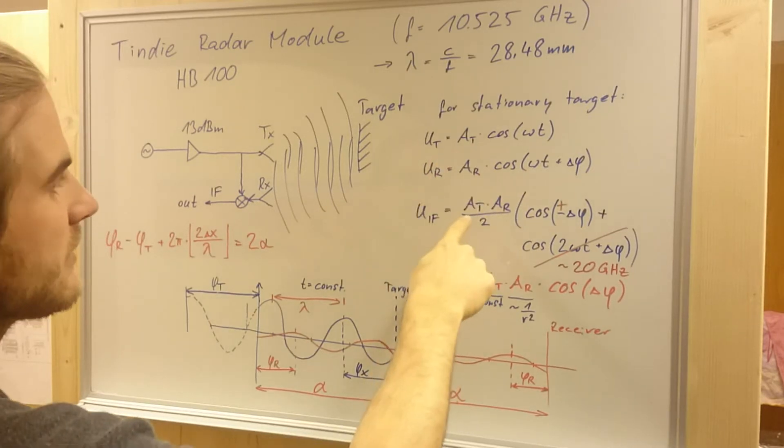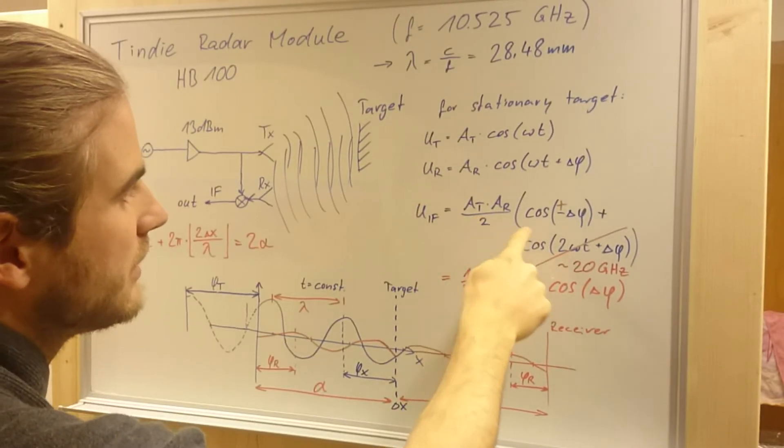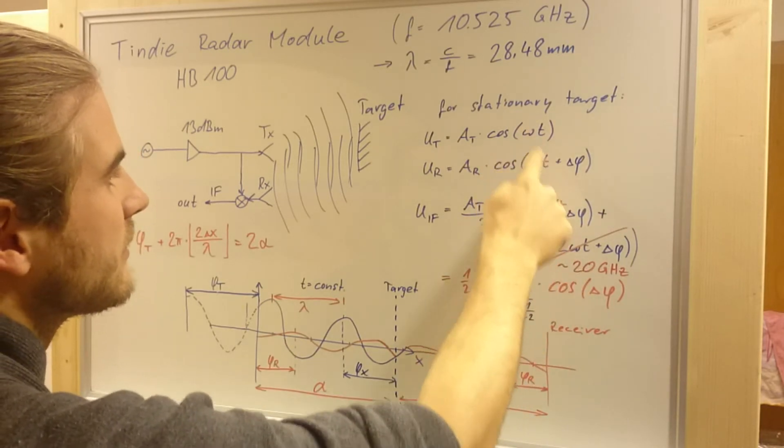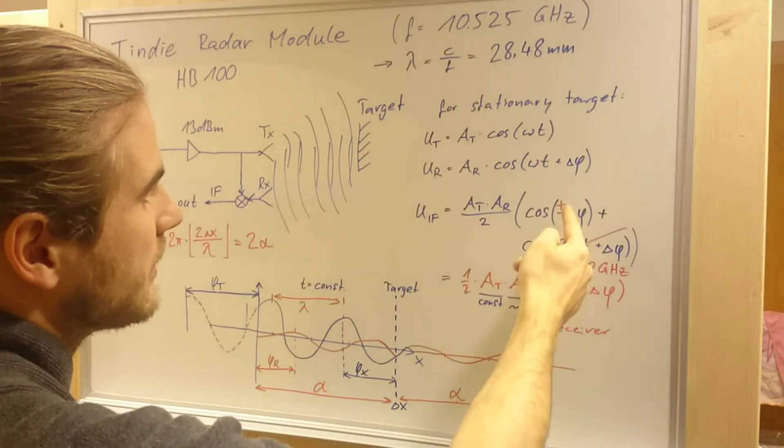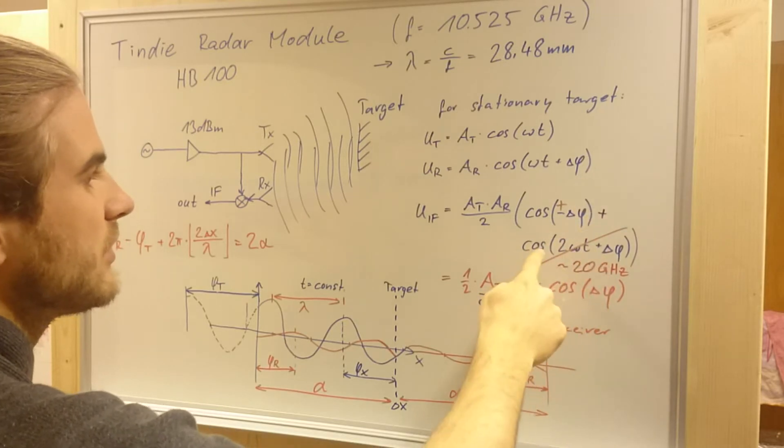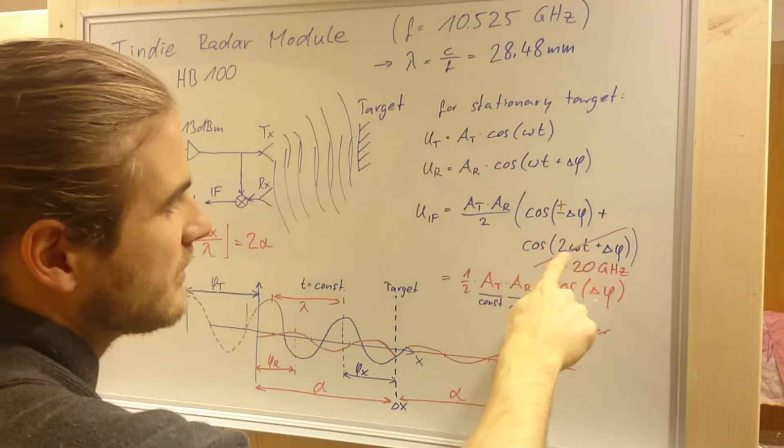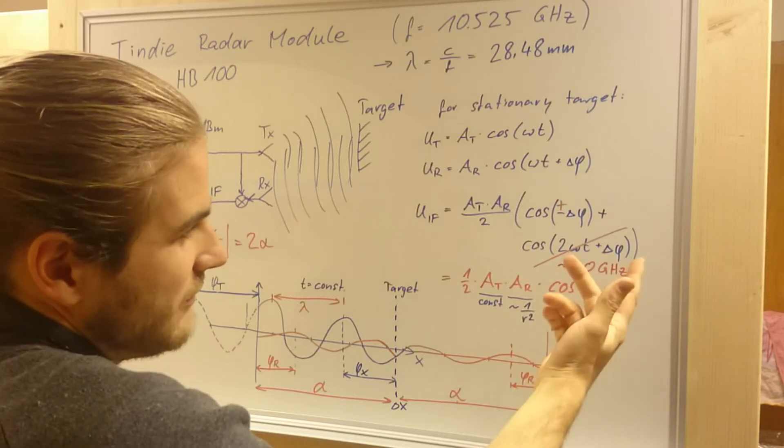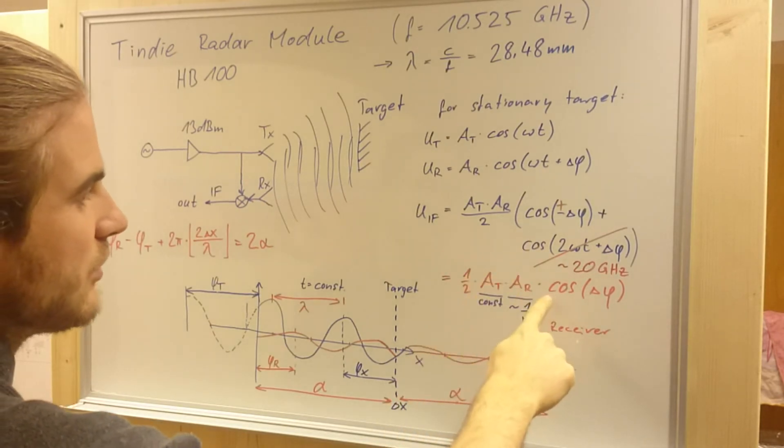When we multiply these, the amplitudes get multiplied. We have a half here. And then we have the cosinus of the difference of these arguments, which is then delta phi, plus the cosinus of the sum of these arguments. And the sum of these arguments is about 20 gigahertz. This will be filtered out or even can't be done by the hardware, which is built in there. So, what is left over is the cosinus of delta phi.